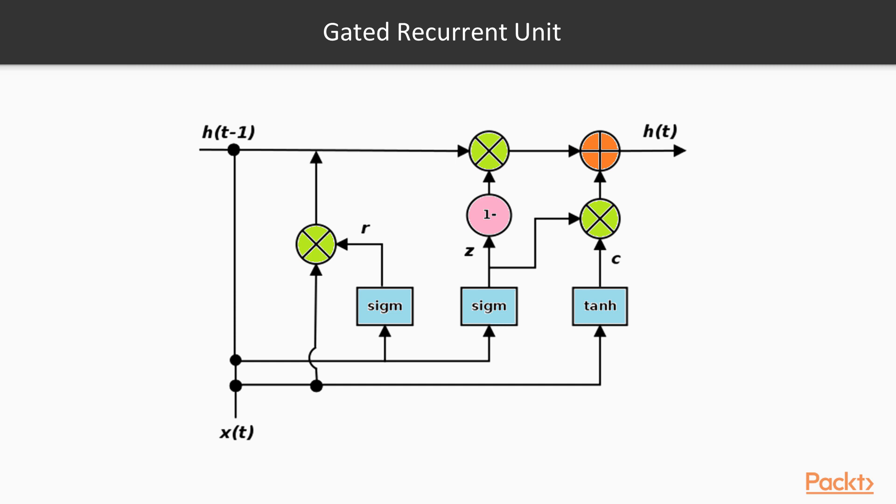Finally, we need to decide what we are going to output. This output will be based on our cell state, but will be a modified version. First, we run a sigmoid layer which decides what parts of the cell state we are going to output. Then, we put the cell state through a tanh function and multiply it by the output of the sigmoid gate, so that the network only outputs the parts it has decided to.